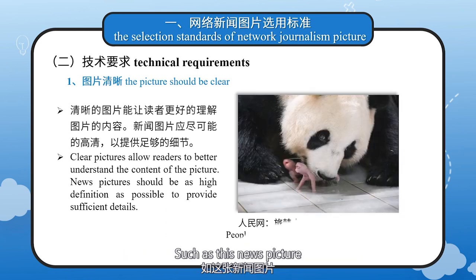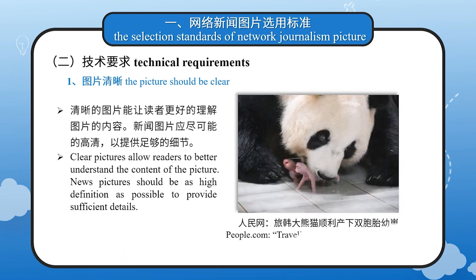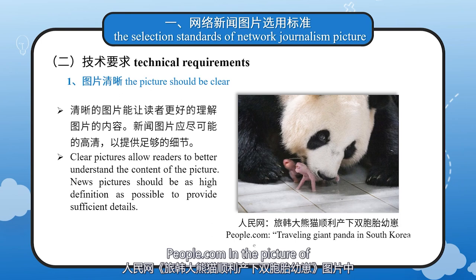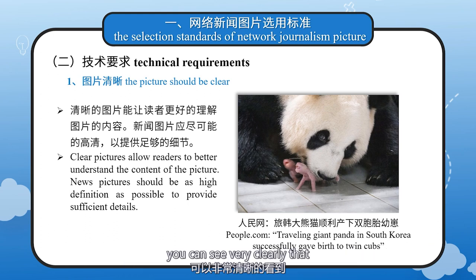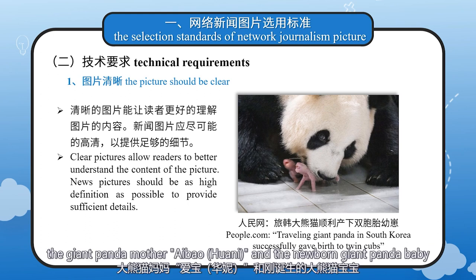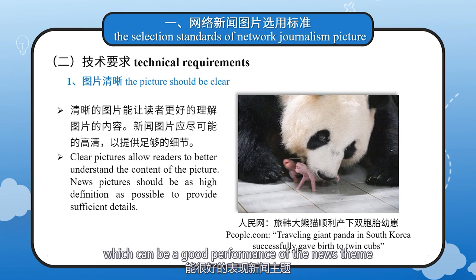For example, this news picture from people.com — in a picture of a traveling giant panda in South Korea that successfully gave birth to twin cubs — you can see very clearly the giant panda mother and the newborn giant panda baby, which can effectively convey the news theme.